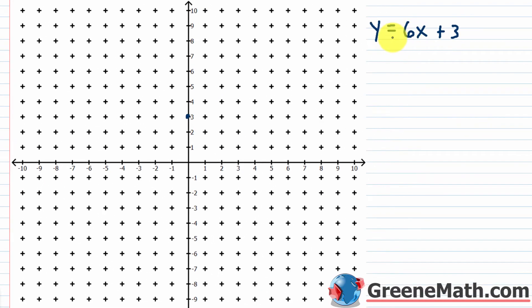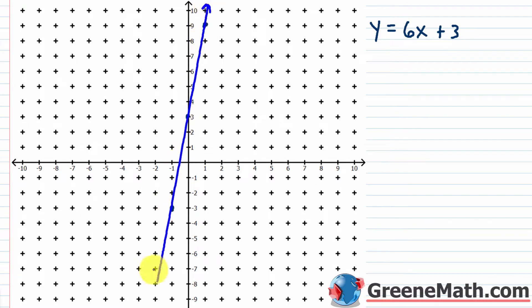My slope is 6, so I go up 6 and to the right 1, or I could go down 6 and to the left 1. Let's go ahead and graph this. This is the graph for y equals 6x plus 3 — we just graphed a linear equation in two variables, no big deal.